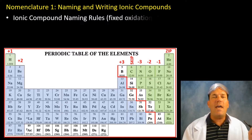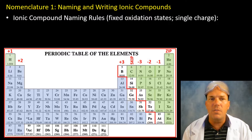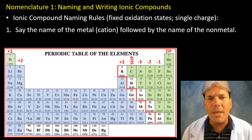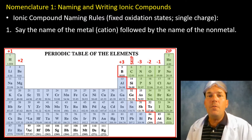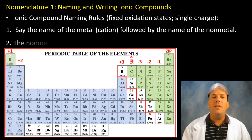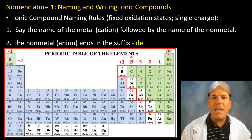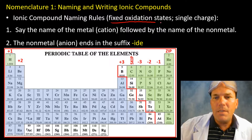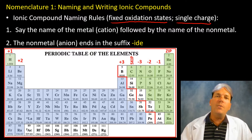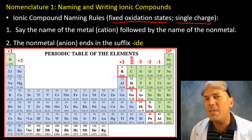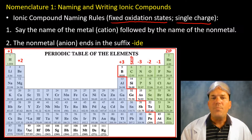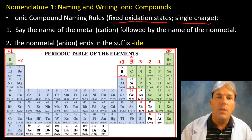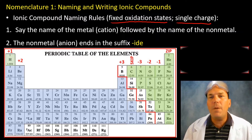We're going to look at two rules. Rule number one: when naming ionic compounds, say the name of the metal (the cation), followed by the name of the non-metal, but the non-metal will now end in the suffix "-ide." For now, just know that we're naming ionic compounds that only have a single charge.